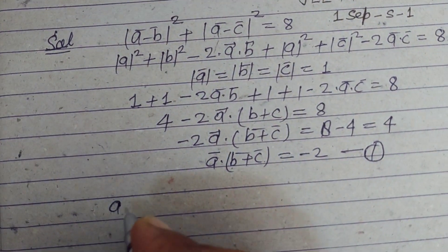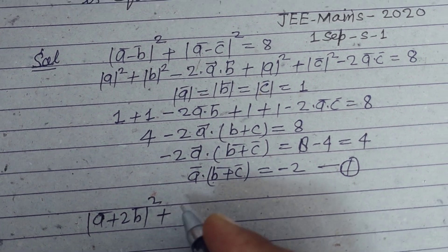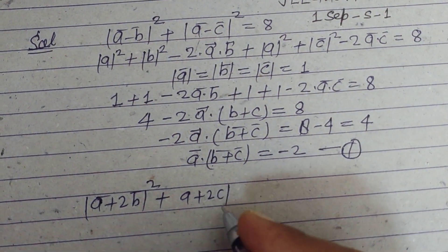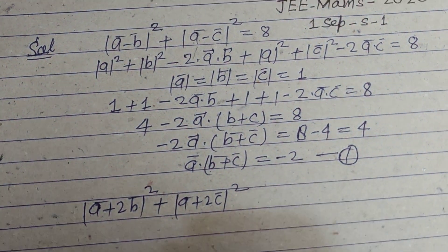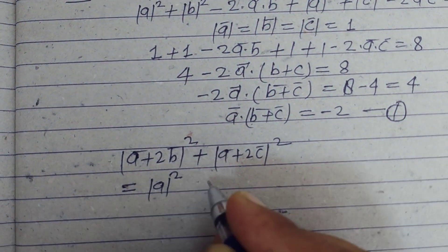Now what we want to find out: we have a plus 2b mod whole square plus a plus 2c mod whole square. We want to find out its value, now expanding this.